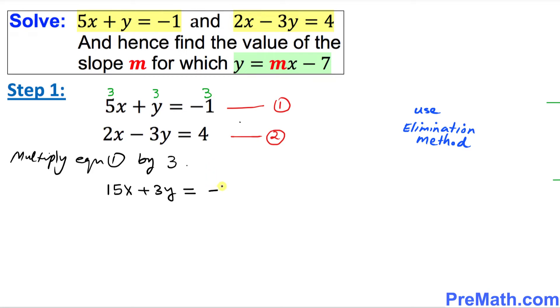And now we want to add this new equation with equation 2. So I'm going to say add whatever we got, add it to equation 2, and equation 2 in our case is 2x minus 3y equals 4. Let's go ahead and add them up.